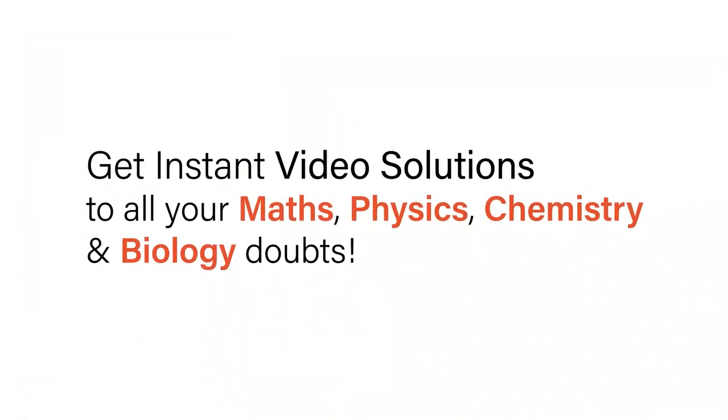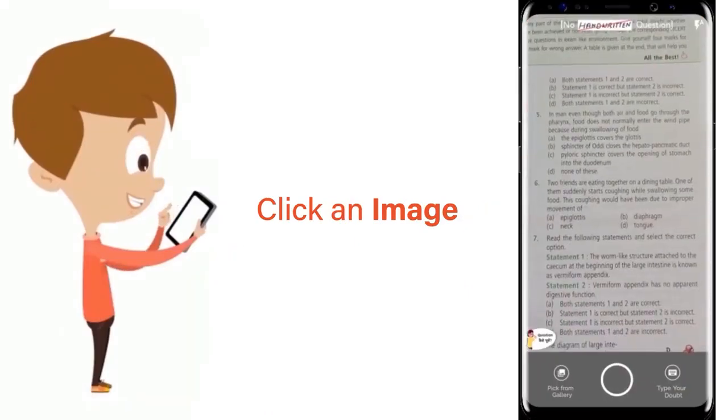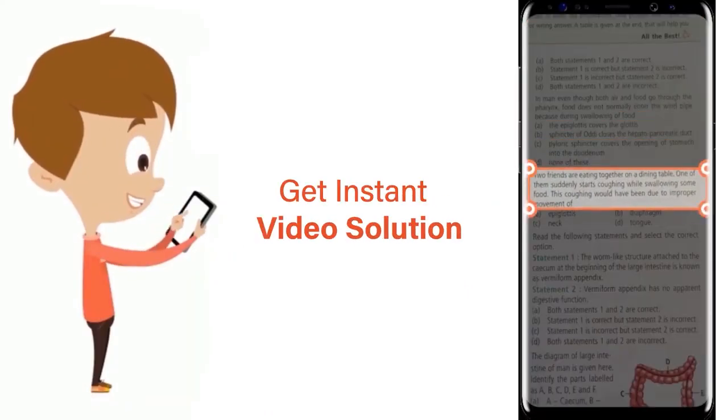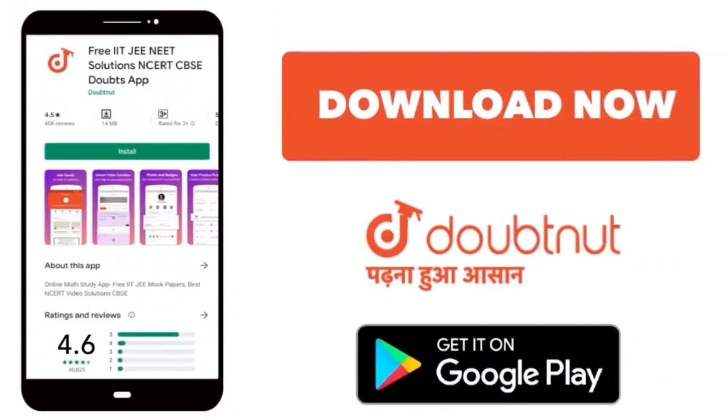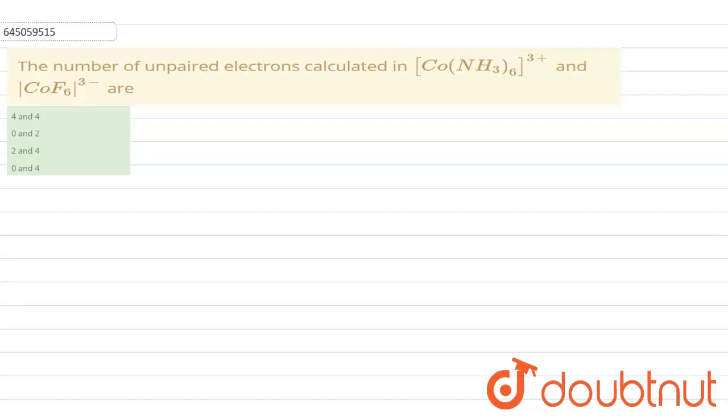With Doubtnut, get instant video solutions to all your math, physics, chemistry, and biology doubts. Just click the image of the question, crop the question, and get instant video solution. Download Doubtnut app today. Hello everyone, in this question we have to find out the number of unpaired electrons in the given complex.